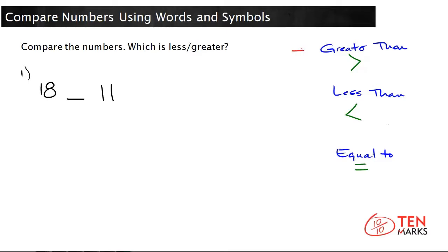The first one is the greater than symbol. This symbol means that the number on the left is greater than the number on the right. The next symbol is the less than symbol. This means that the number on the left is less than the number on the right. And the last symbol is the equal to, which means that the number on the left has the same amount, or is equal to the number on the right.